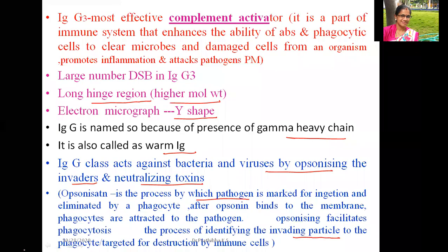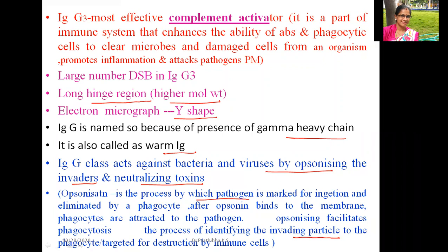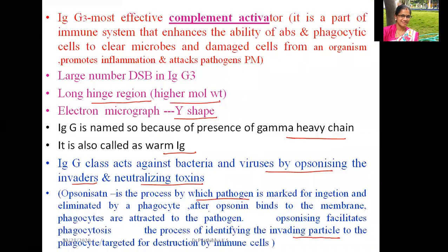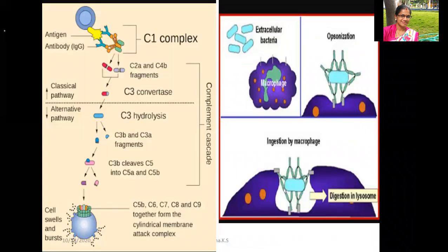After opsonin binds to the membrane, phagocytes attach to the pathogen — opsonization facilitates phagocytosis. Here you can see the macrophage engulfing the extracellular bacteria, while IgG immunoglobulin brings about the opsonization process. Ingestion by the macrophage and digestion in the lysosome are facilitated by IgG through opsonization.